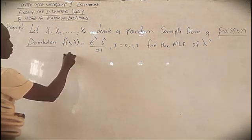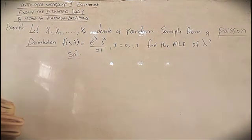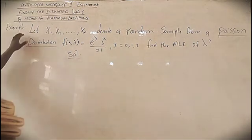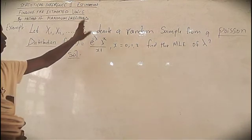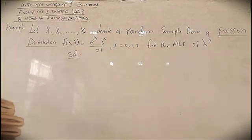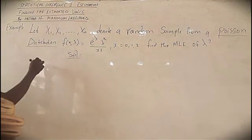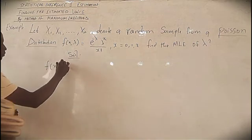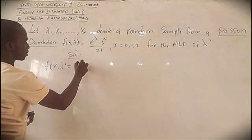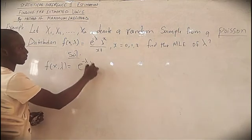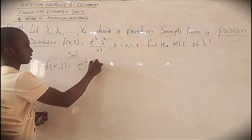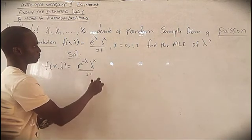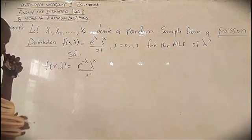In case this Poisson problem comes up, you notice it's a little bit different, but because obviously X1, X2, up to Xn are given, it is not that difficult. So let's get our distribution function: f(x; λ) = exp(−λ) · λ^x / x!. That's all we need.